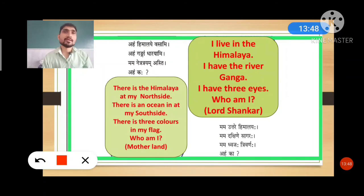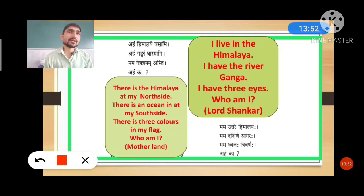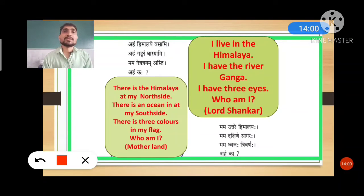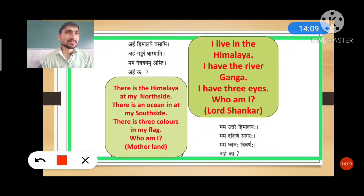Let me repeat once: I live in the Himalaya, I have the River Ganga, I have three eyes — who am I? Lord Shankar. There is the Himalaya at my north side, there is an ocean at my south side, there are three colors in my flag — who am I? Motherland.